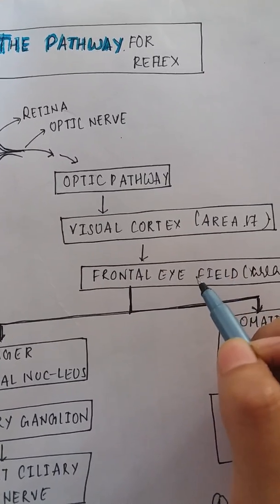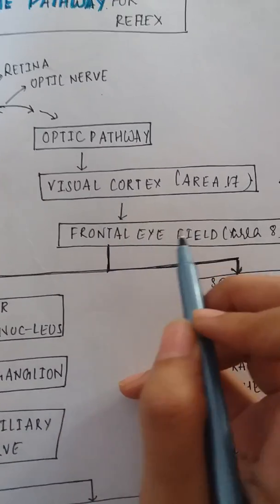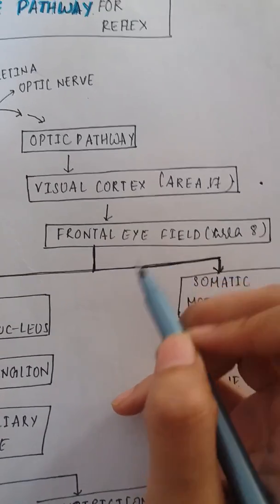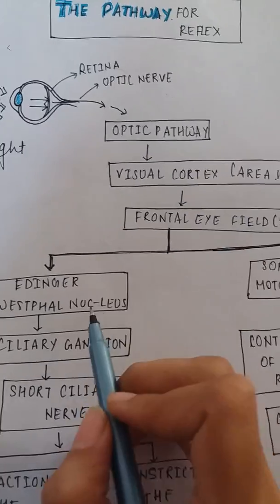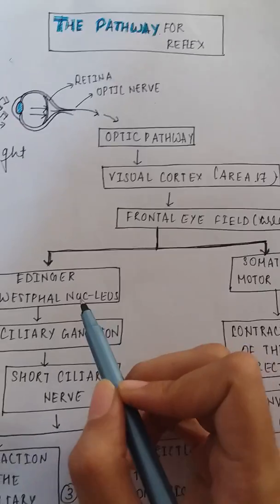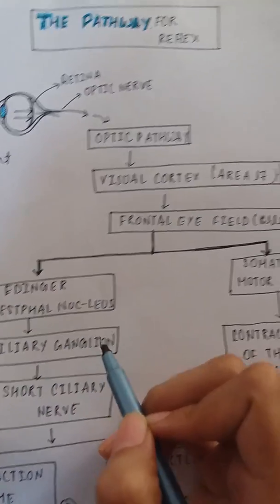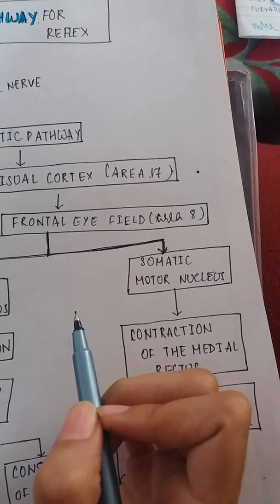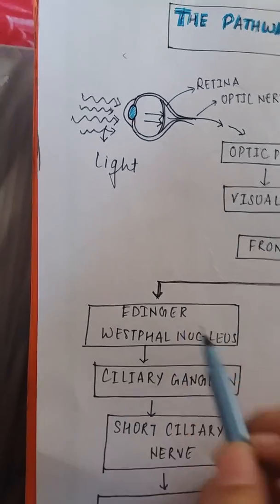The impulses reach the visual cortex at area 17, and from there they travel to the frontal eye field, which is area 8 of the visual cortex. From area 8, the impulses enter two nuclei: the Edinger-Westphal nucleus and the somatic motor nucleus.